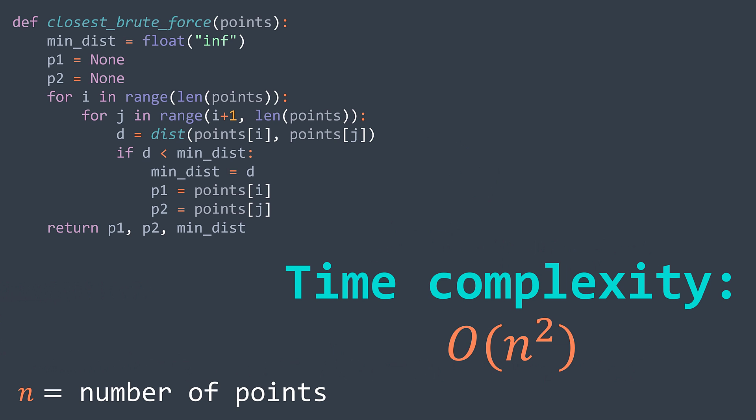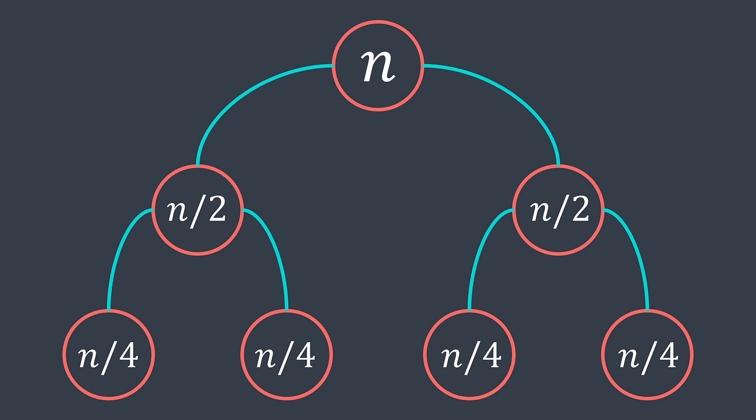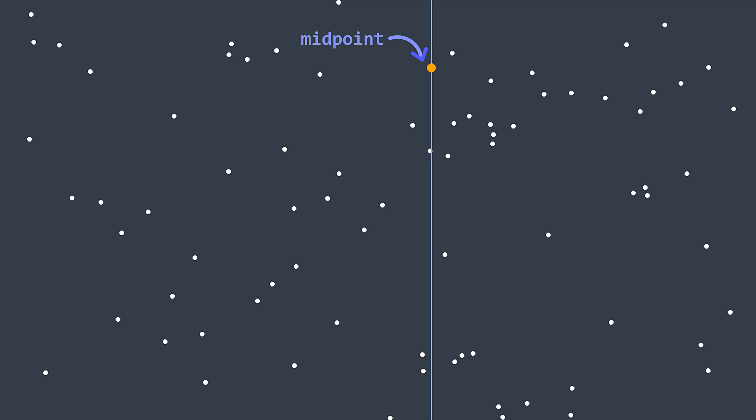What if we can solve this problem with divide and conquer? The idea is to divide the set of points into two parts: the points that come before the midpoint, and the points that come after. After doing so, we recursively call the function to get the closest pair in the left part — Delta L — and call again to get the closest pair in the right part — Delta R.